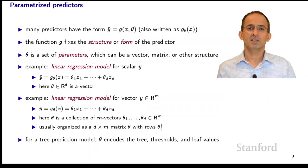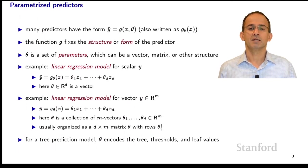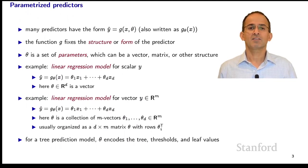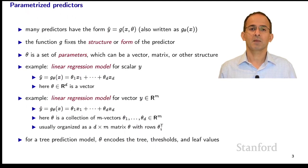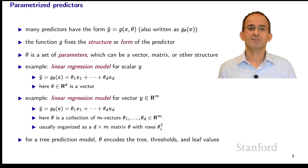Many of the predictors that we've seen — in fact many predictors overall — have a parameterized form. We think about y-hat as g of x and theta, where g is a function that determines the structure or form of the predictor. It might be a neural network, a linear predictor, or a tree. Theta is a set of parameters — it might be a vector, a matrix, or some other data structure — and it's one of the determinants that produces the output y-hat. When we learn, we choose the parameters theta and leave g fixed.